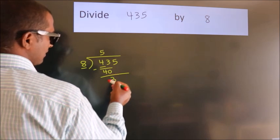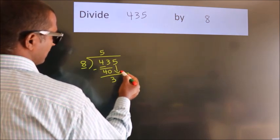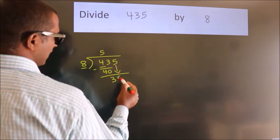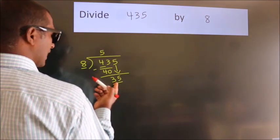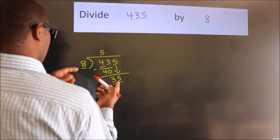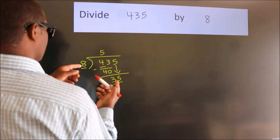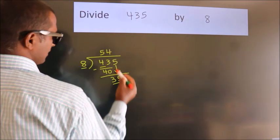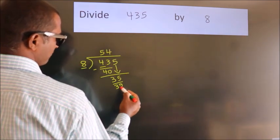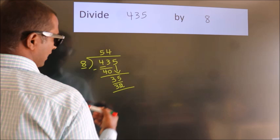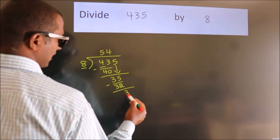After this, bring down the beside number. So 5 down, so 35. A number close to 35 in 8 table is 8 fives 32. Now we subtract, we get 3.